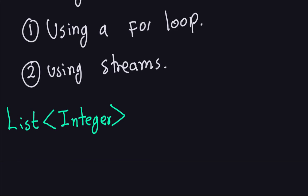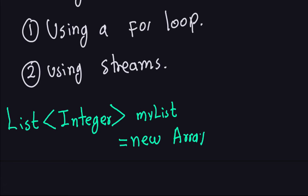Similar to how you create an object, you put the name of your list — I'll call it myList — and you can name it whatever you want as long as you follow Java naming conventions. Then you say equals new ArrayList, set the type Integer, close the parentheses, and add a semicolon. That line of code creates the list that will hold integers.